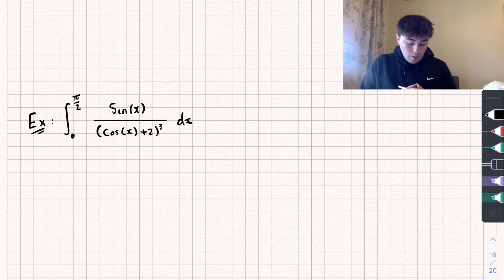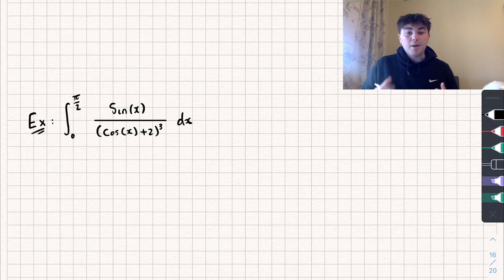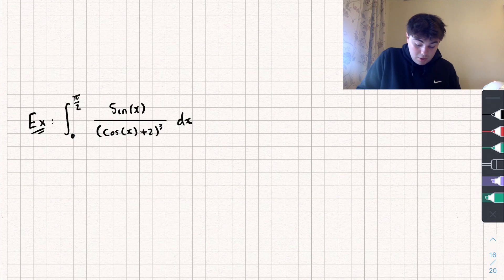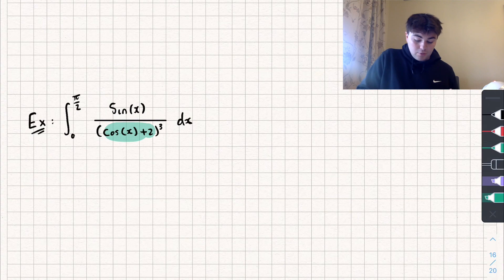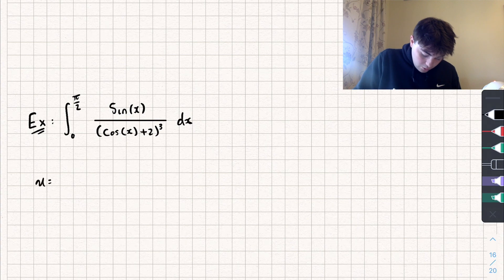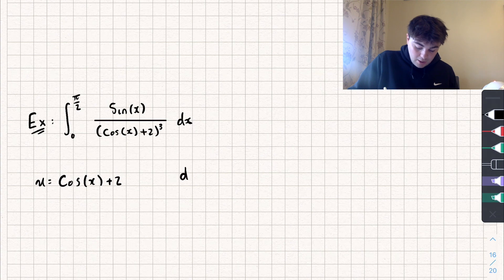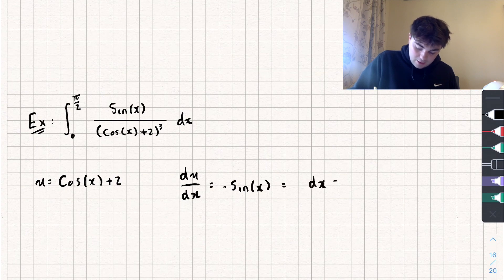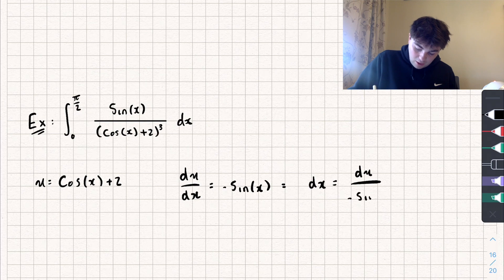Let's look at the final example, where we want to integrate between 0 and π/2 of sin x divided by (cos x plus 2) cubed with respect to x. I'm going to set u equal to cos x plus 2, because when I differentiate cos, it goes to negative sin, which is going to cancel with the numerator. So u equals cos x plus 2, and therefore du/dx equals negative sin x. Rearranging, dx equals du divided by negative sin x.